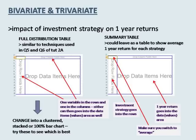For example, we can see whether the average one-year return for funds investing in property is the same or different to the average one-year return for funds investing in cash, and in fact we can look at every investment strategy. While we could sort the whole data set and use lots of individual average formulas, we can do this analysis more quickly by creating a pivot table. Put investment strategy into the rows area and one-year return into the values area, then change the field settings so that you calculate an average rather than a count.